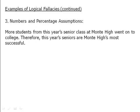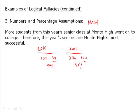Next: numbers and percentage assumptions. 'More students from this year's senior class at Monty High went on to college. Therefore, this year's seniors are Monty High's most successful.' You have a number — but what does it mean? Imagine the 2010 class had 100 students and 99 went to college. Then in 2011, there were 200 students and 100 went to college — more than 99, but only 50% versus 99%. You have to account for these math errors or math assumptions.